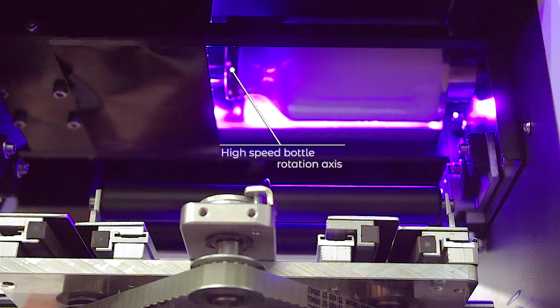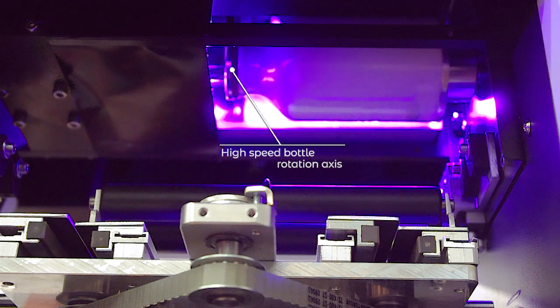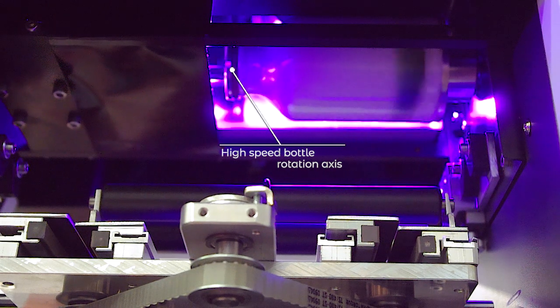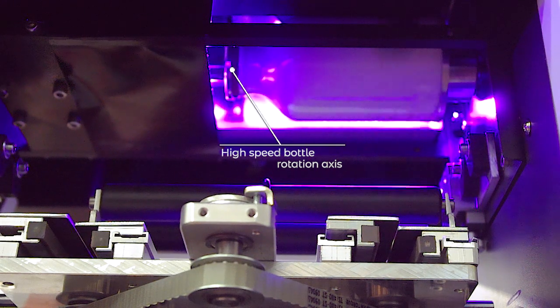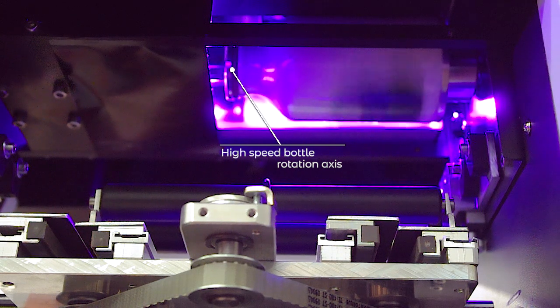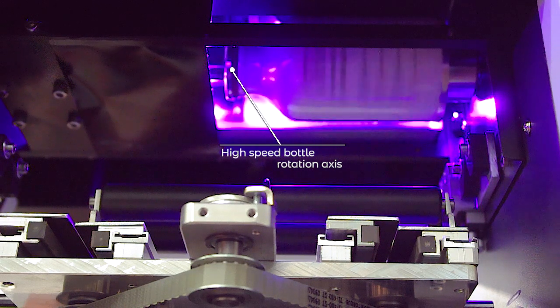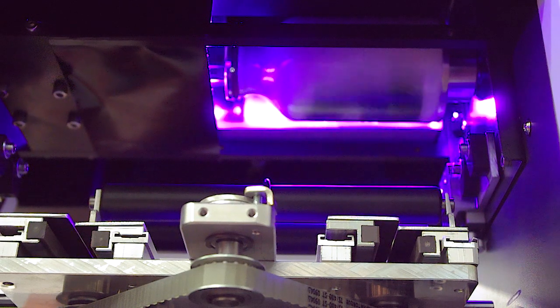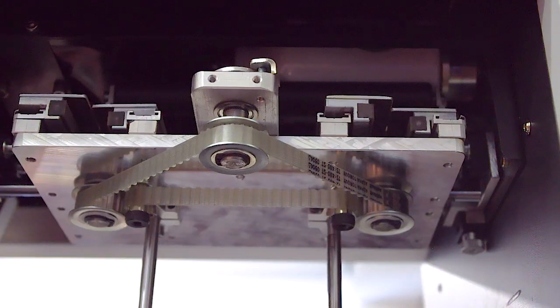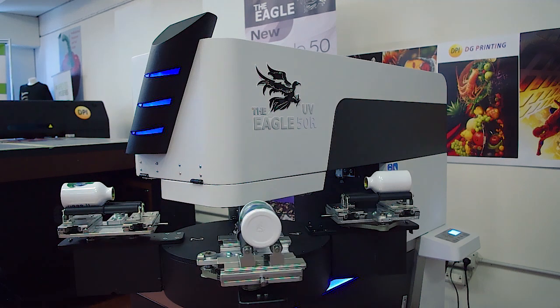Using the latest generation Ricoh print heads, this system meets the demands of high production, therefore industrial, thanks to a printing speed of about 30 seconds for a single object with a height up to 20 cm and diameter up to 8 cm. Furthermore, the four-station carousel object loading system allows continuous processing without wasting time due to loading and unloading of objects.